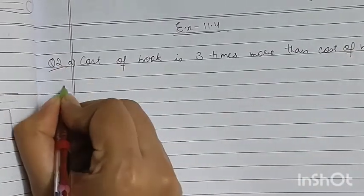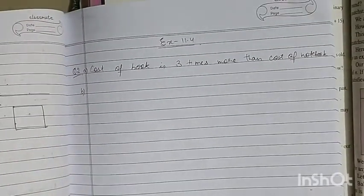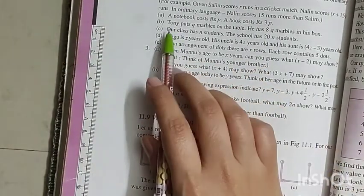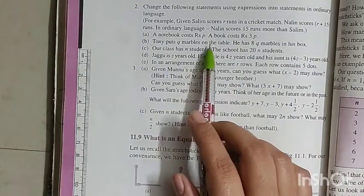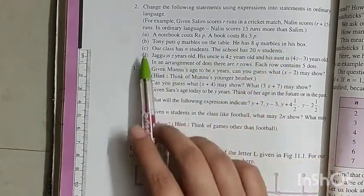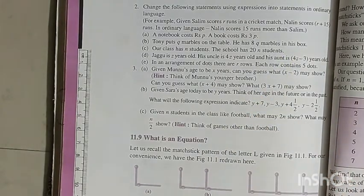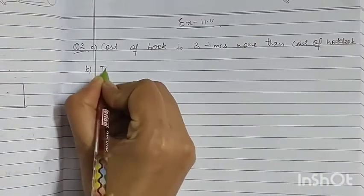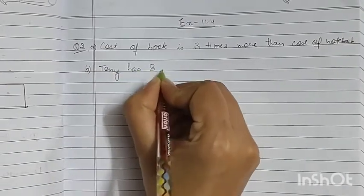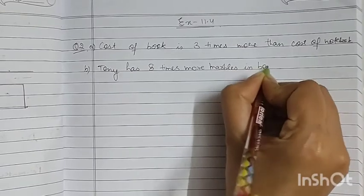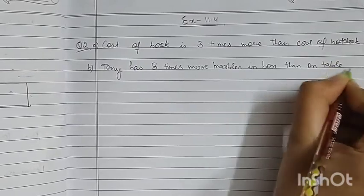Now second part. Tony puts q marbles on the table; he has 8q marbles in the box. Tony ne table par q marbles rakhe hain aur uske box mein 8q marbles hain. Isko ordinary language mein hum likhenge: Tony has 8 times more marbles in the box than on the table.